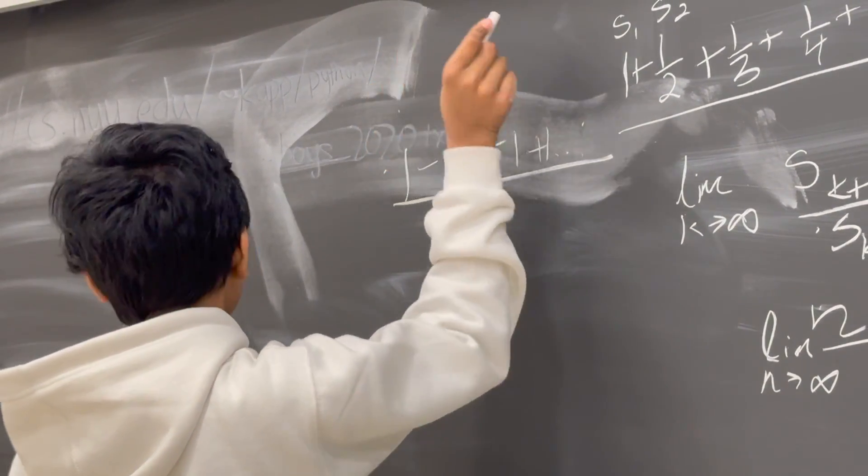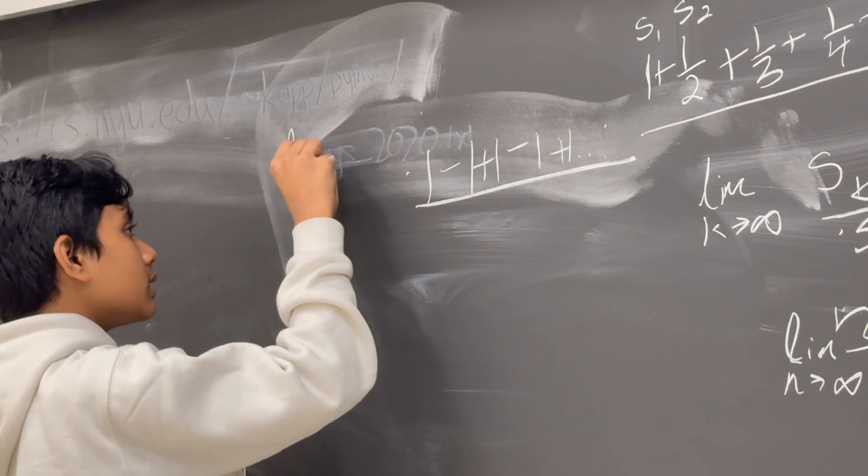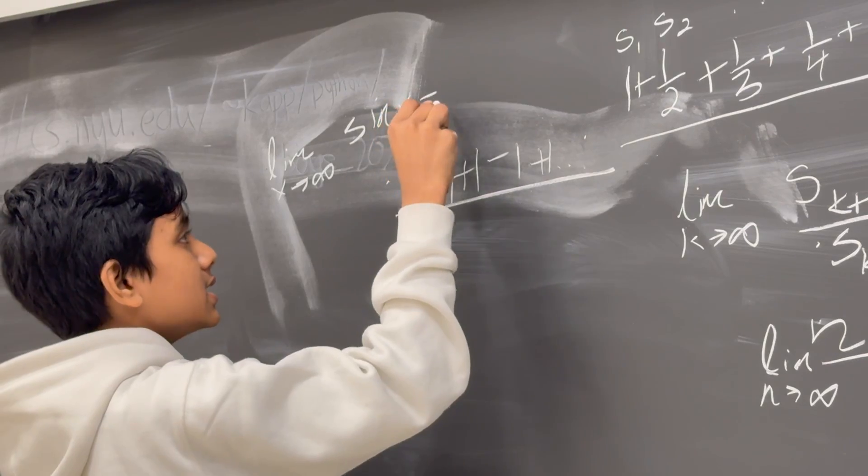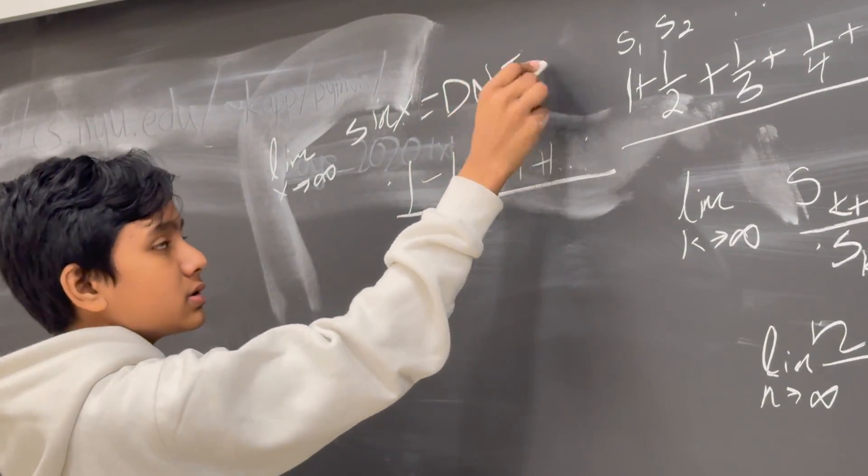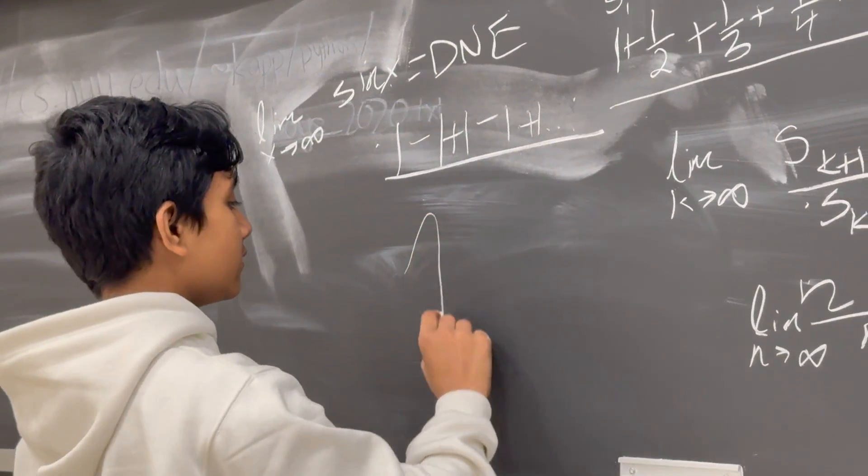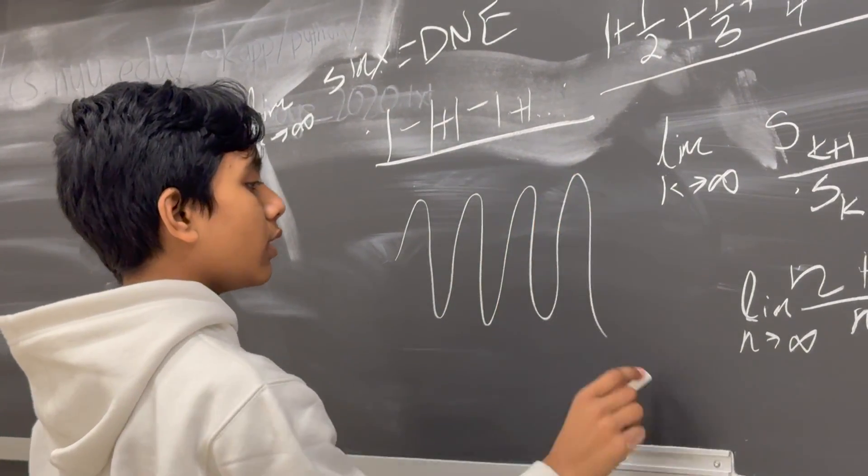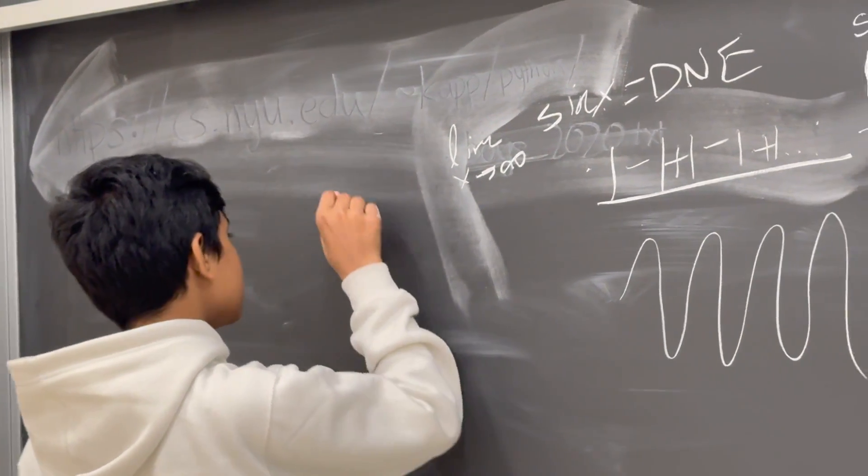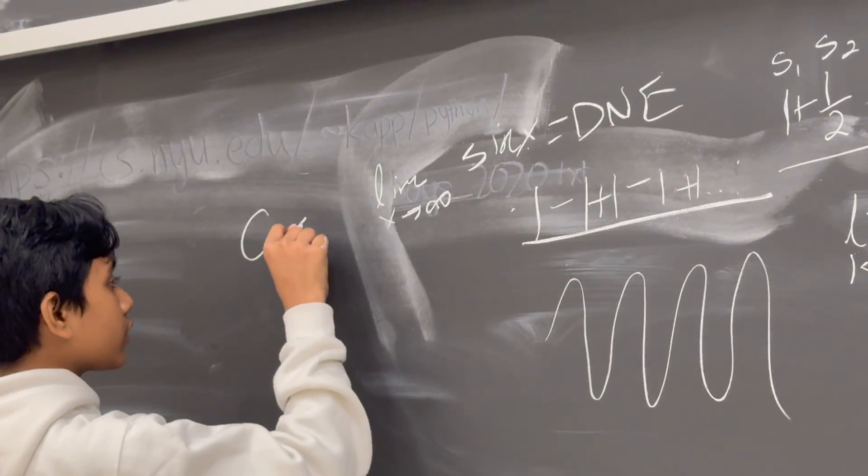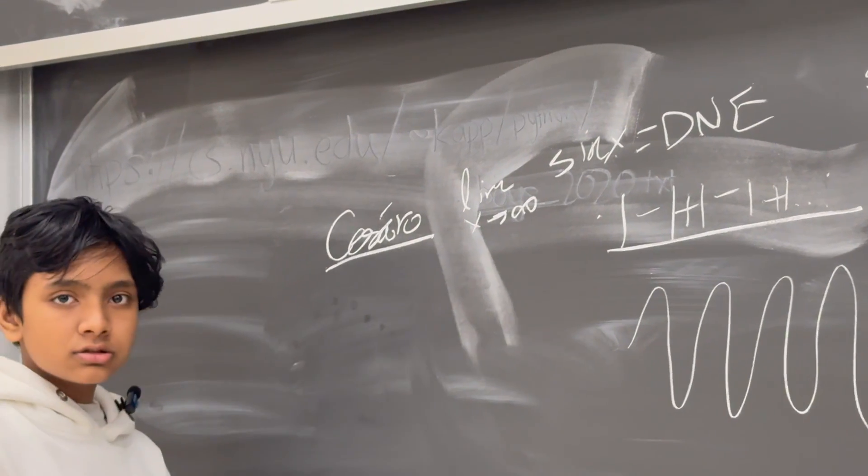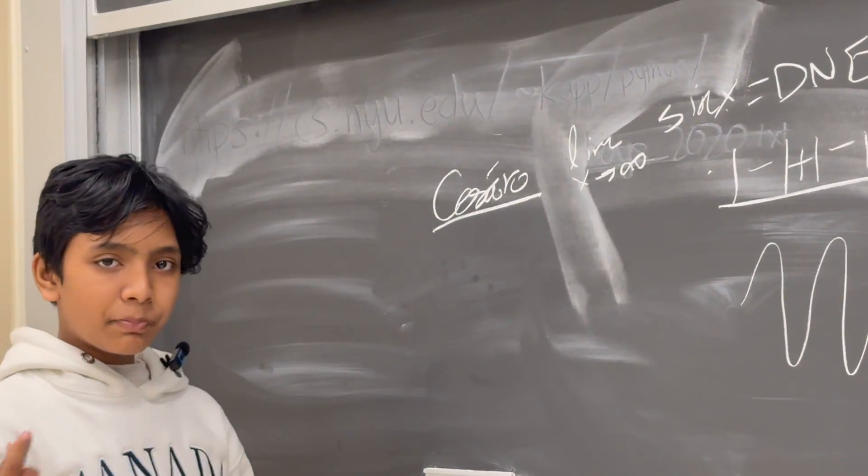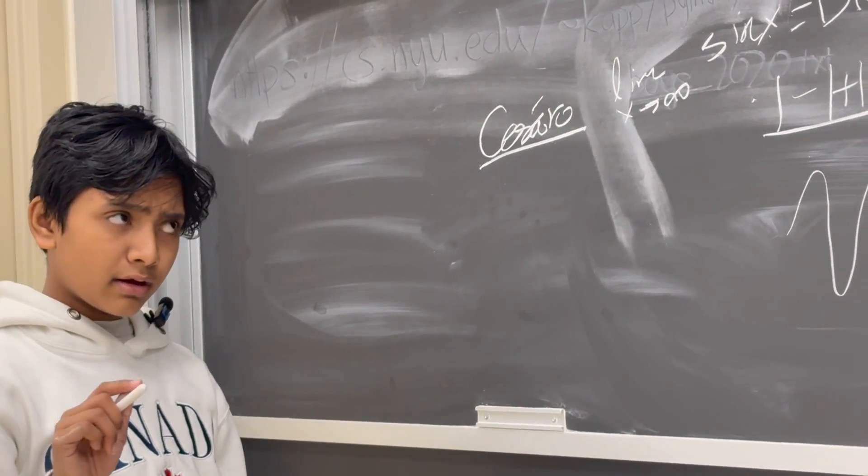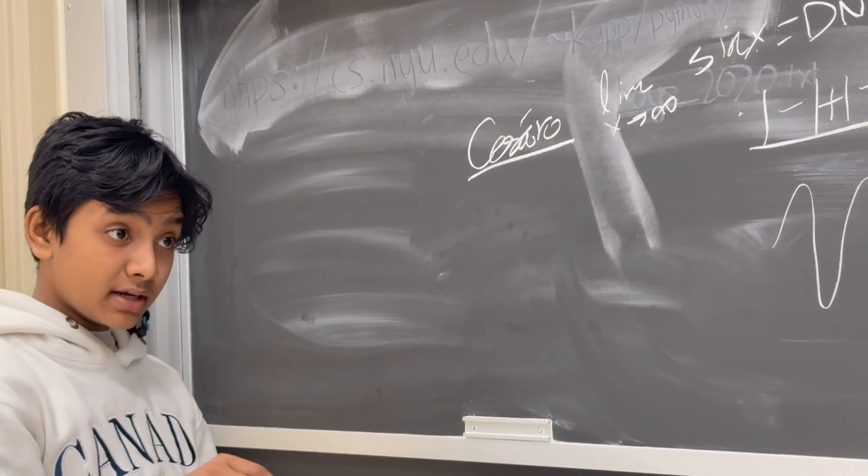Just like, for example, the limit as X approaches infinity of sin(X), this does not exist. Similarly, this is infinitely oscillating between 1 and 0, so it doesn't really work out. But we can use something called Cesaro summation, which is useful for a number of reasons that we'll cover in the next lecture. The Cesaro summation is basically an arithmetic mean of the partial sum.